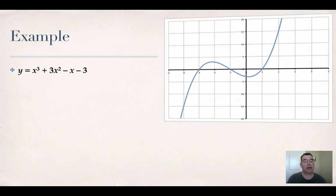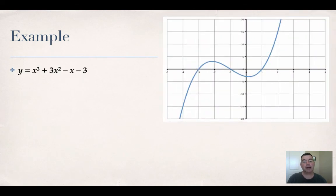Let's look at an example. I have y = x³ + 3x² - x - 3. There's a maximum at (-2.15, 3.08) and a minimum at (0.154, -3.08).